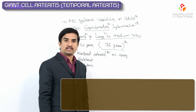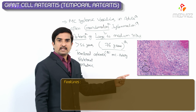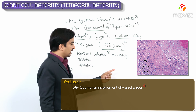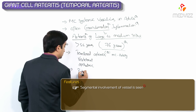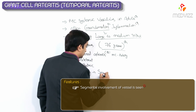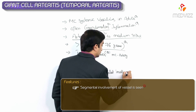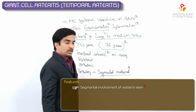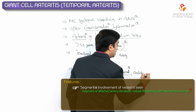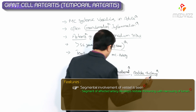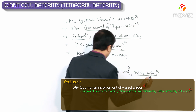When discussing the pathology of the vessel wall in Giant Cell Arteritis, there is segmental involvement — not the entire vessel wall is affected, but involvement in certain segments. This is an MCQ point: segmental involvement of the vessel wall. The affected segment shows nodular thickening with narrowing of the lumen.